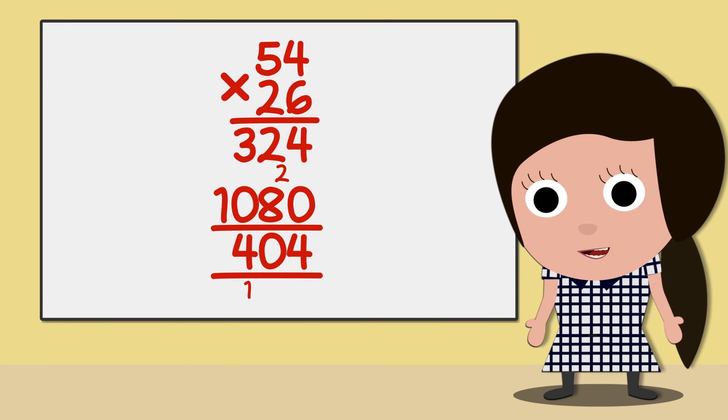1,000 add nothing is 1000, leaving us with a final answer of 1,404.